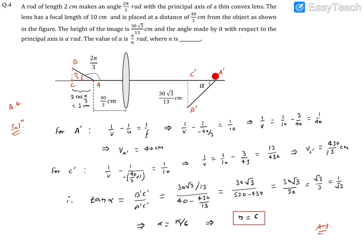A' is the image of point A. Point A is at 40/3 centimeters from the lens. For A', we use the lens formula: 1/v - 1/u = 1/f. So 1/v = 1/f - 1/u, where u = -40/3 and f = 10 centimeters.